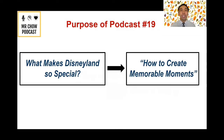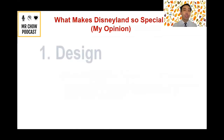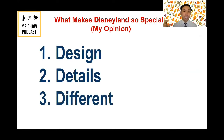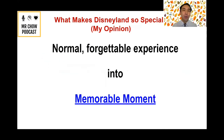On Thursday we talked about Disneyland. The big idea was: what makes Disneyland so special, and how can we use that to create memorable moments on our own? In my opinion, three things make Disneyland awesome: great design, attention to detail, and how different it is from normal life. As you go through life, take everything Disneyland does well and apply it to your own events — take a normal, forgettable experience and make it into a memorable moment.